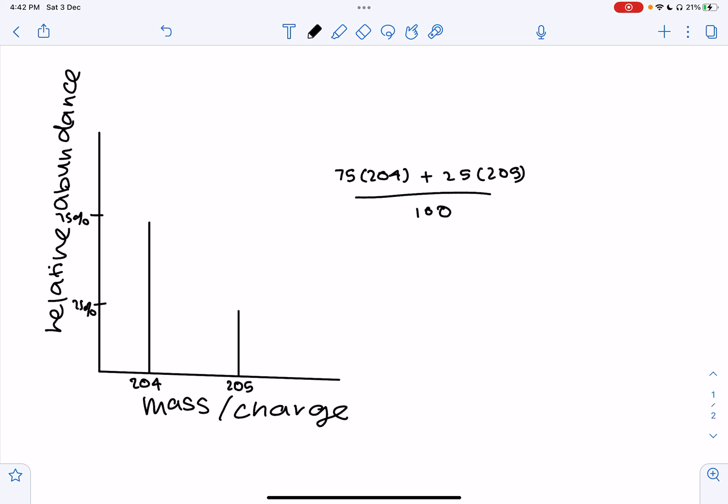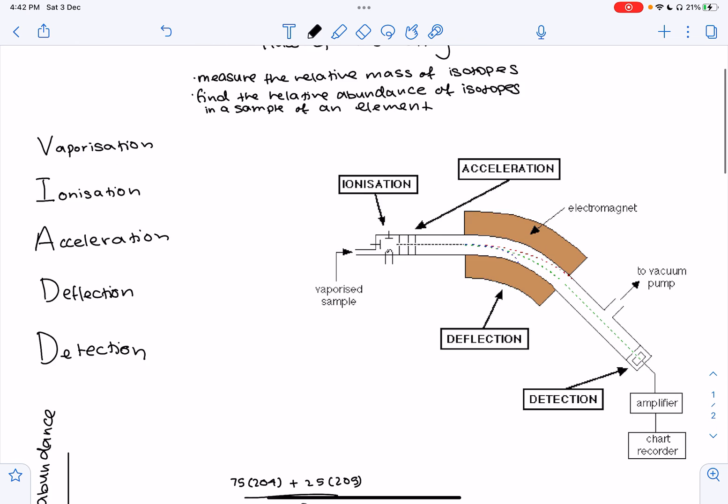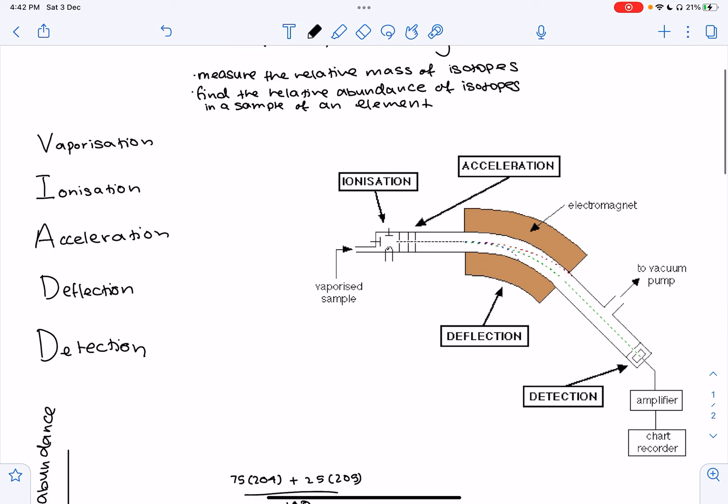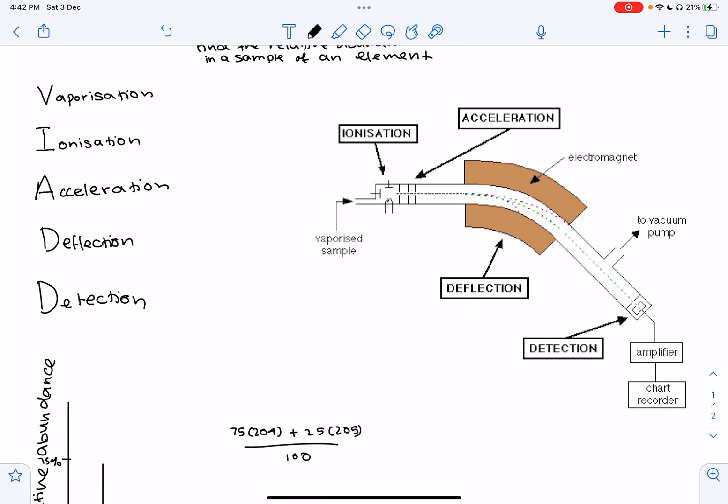This is very important to remember because then you know that this is the process of mass spectrometry and this is how we can find relative atomic mass. Thank you for listening.